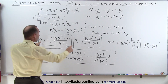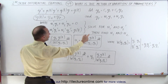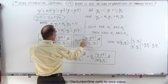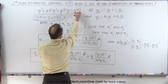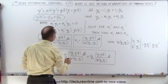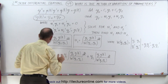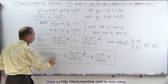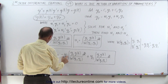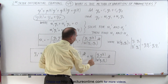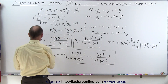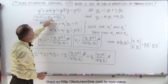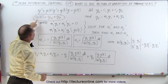Once we've determined u1 and u2 — after first finding y1 and y2 by solving the homogeneous part, computing the Wronskian, and taking g(t) from the equation — we integrate both expressions. Finally, the particular solution is u1·y1 + u2·y2. We then add that to the homogeneous solution to get the general solution of the differential equation.